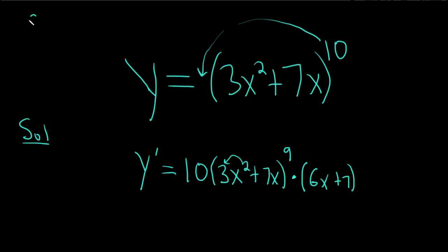The chain rule formula looks like this. It says if you have f of g of x, and you take the derivative, you take the derivative of the outside, you leave the inside untouched, and then you multiply by the derivative of the inside.